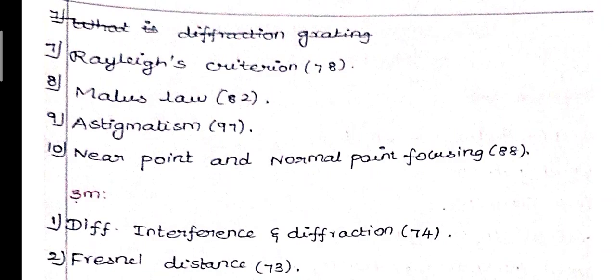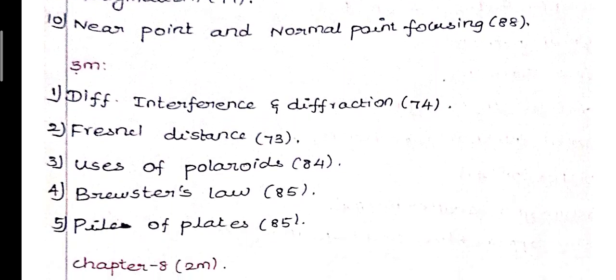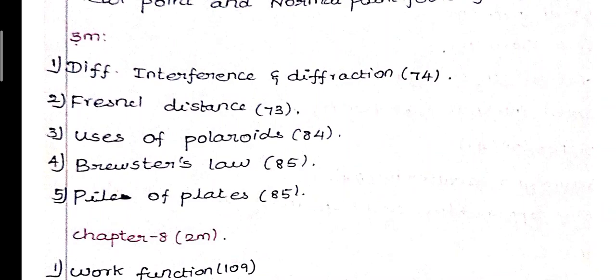Continuing Chapter 7 Wave Optics 2-mark questions: 8th question - Malus's law, page 82. 9th question - astigmatism, page number 97. 10th question - near point focusing and normal point focusing, page 88. 3-mark questions: 1st question - difference between interference and diffraction, page number 74. 2nd question - polaroid distance, page 73. 3rd question - uses of polaroids, page 84. 4th question - Brewster's law, page 85.